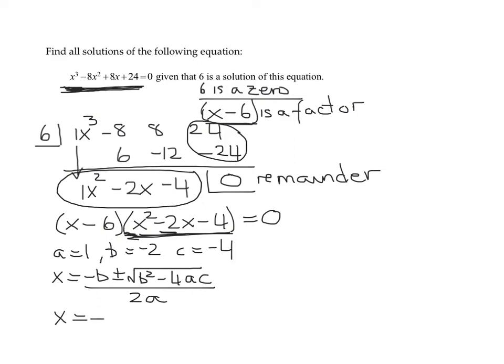So, it's negative b. So, it's the opposite of negative 2 plus or minus b squared. Well, b is negative 2 squared minus 4 times a, which is 1, times c, which is negative 4. All divided by 2 times a, which is 1.